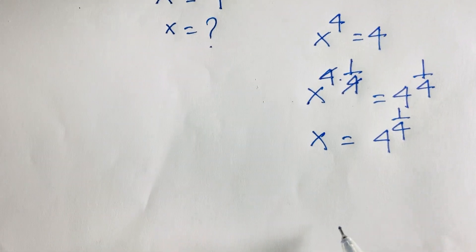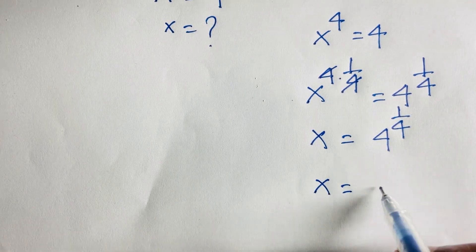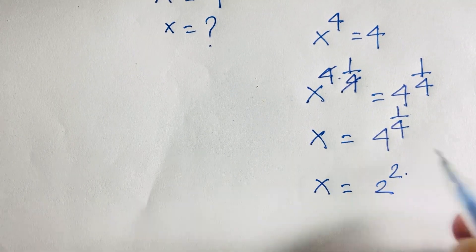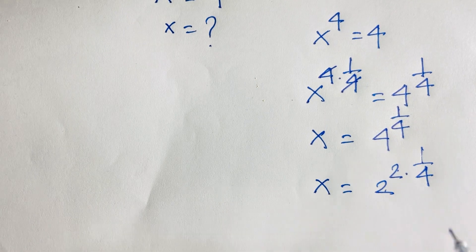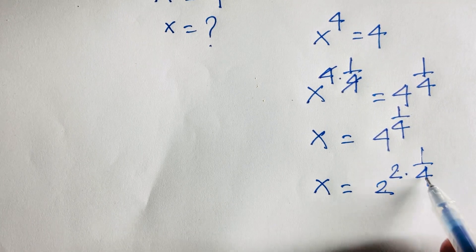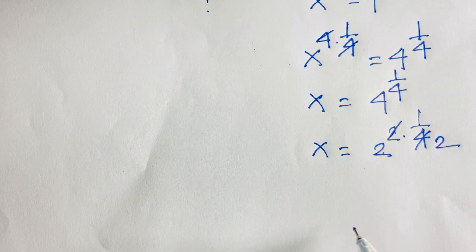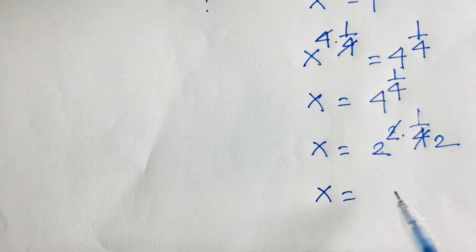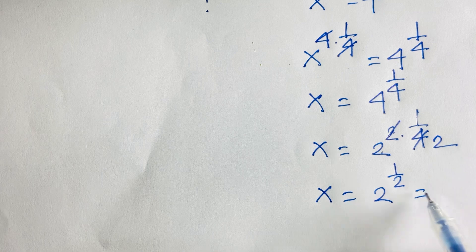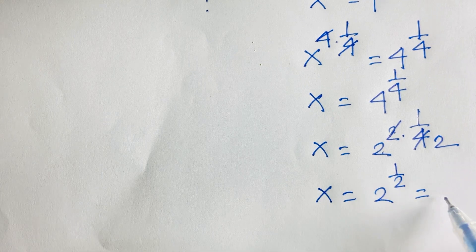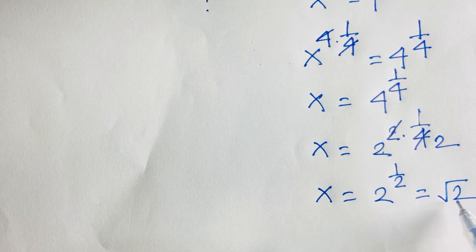This equation becomes x is equal to 4, which will be 2 to the power 2 times 1 over 4. 2 to the power 2 is 4, then this 4 divided by 2 will be 2. So x is equal to 2 to the power 1 over 2. You know that 2 to the power 1 over 2 is square root 2, so x is equal to square root 2.